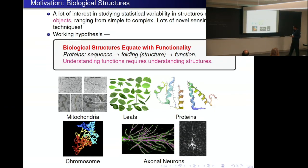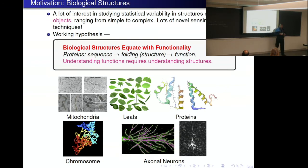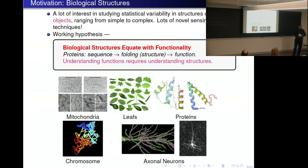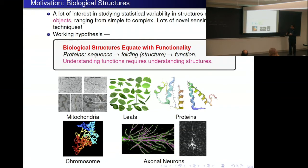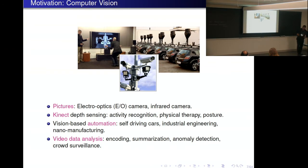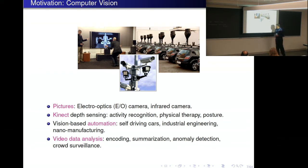The interest in biology in shape is that structures equate with functions. Structures detect, predict, or guide the functionality of that object in a larger system. So we are interested in studying these different things. People look at the same object from many different points of view to highlight one aspect or another. Depth-sensing activity recognition, self-driving cars, and automation are also relevant here.